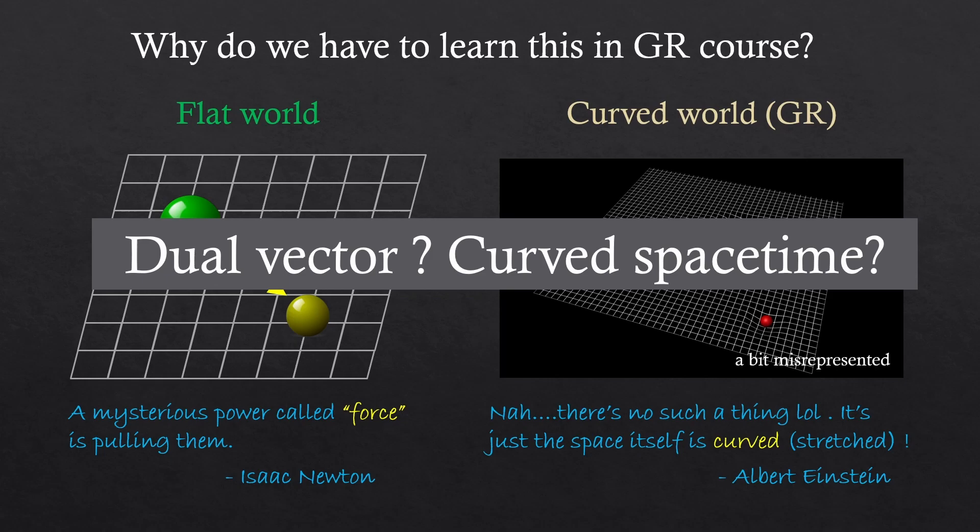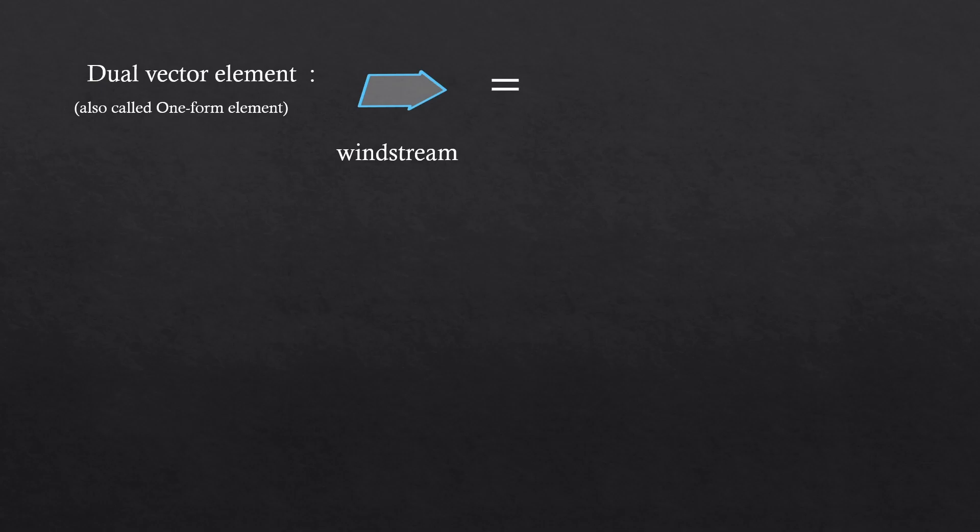By the way, this drawing is a bit misrepresented. I'll try to show a better representation. Our dual vector element, also called one-form element, was a wind stream. I'm now revealing the truth.